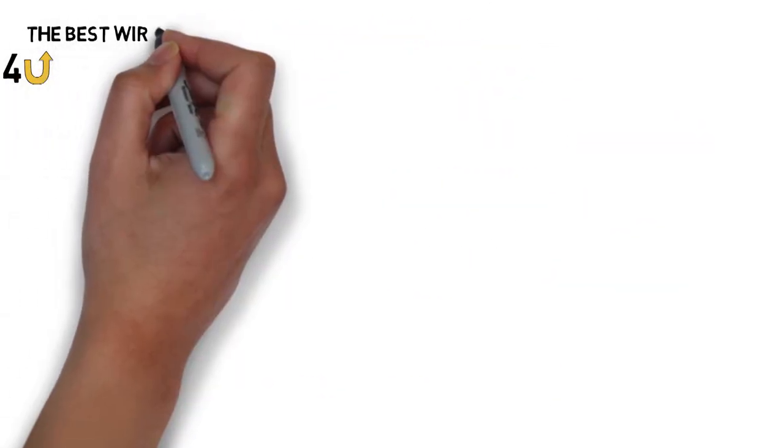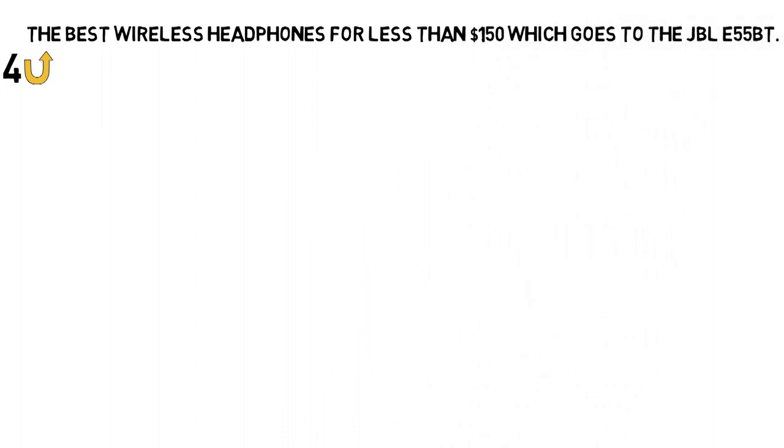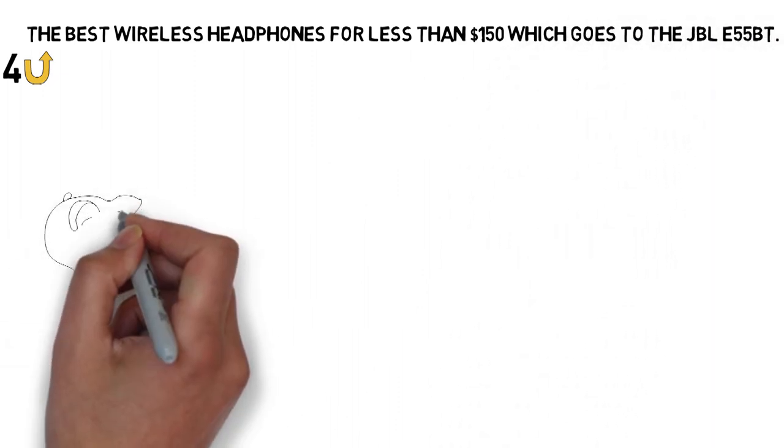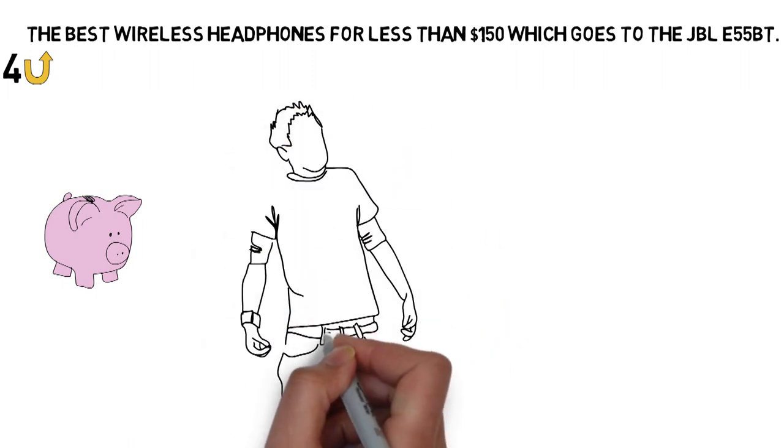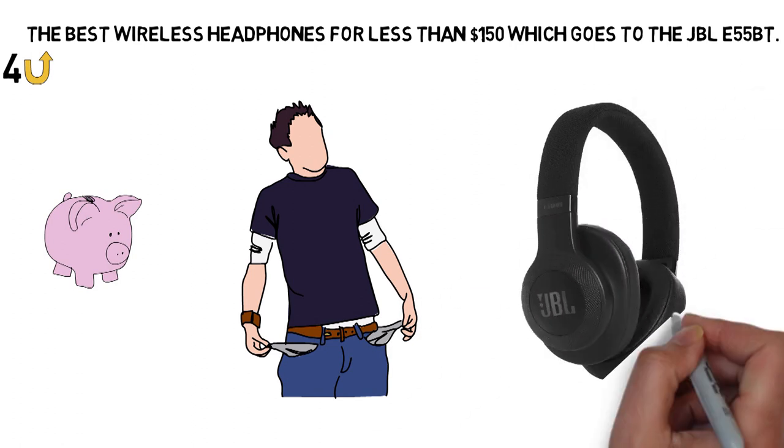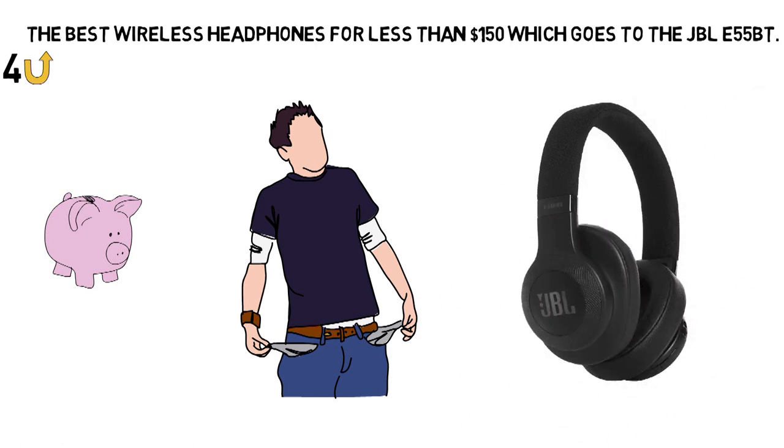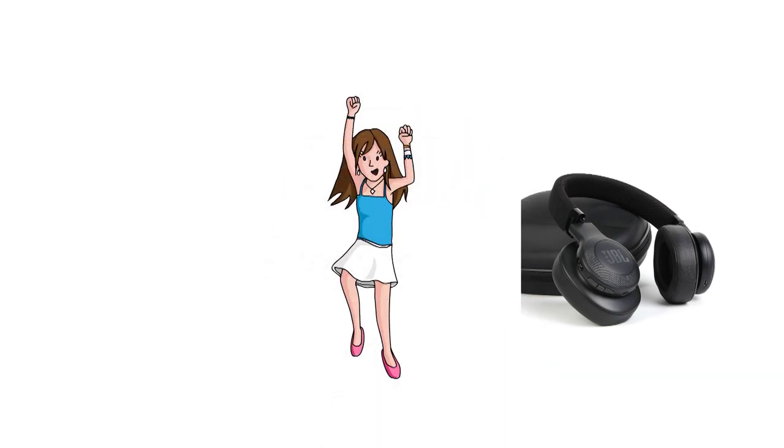Next we have the best wireless headphones for less than $150, which goes to the JBL E55BT. Looking to buy a great pair of Bluetooth headphones on a budget? Just because you don't have a ton of cash doesn't mean you can't get some great headphones. In our testing, the JBL E55BT headphones are the best headphones under $150. For starters, unlike plenty of other headphones, these come with a very fun design. You can get them in a ton of colors, including red, black, blue, green, and white.